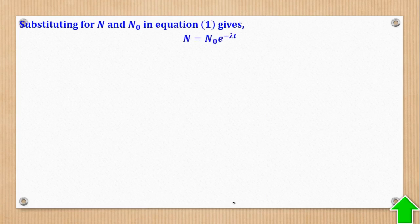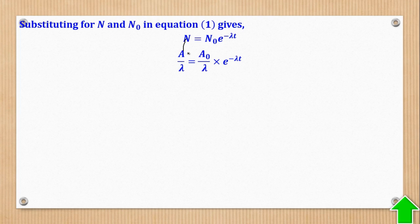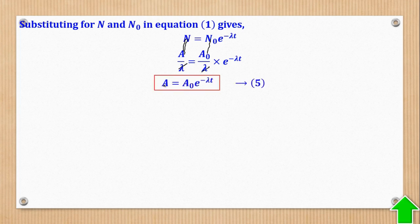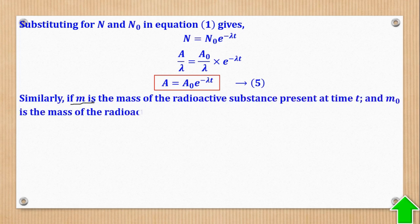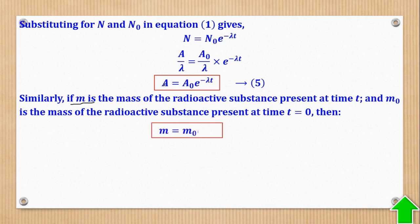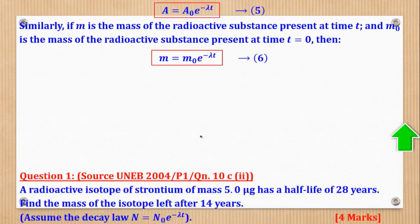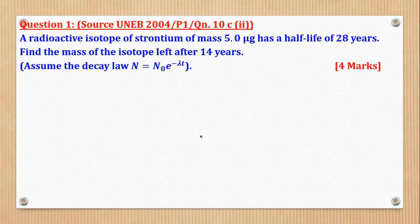Substituting for N and N₀, the activity at any time t is A = A₀e^(-λt). Similarly, if they want the mass at any time t, the formula is M = M₀e^(-λt), where M₀ is the original mass. Those are the formulas we need so far, and we shall now go to the questions.